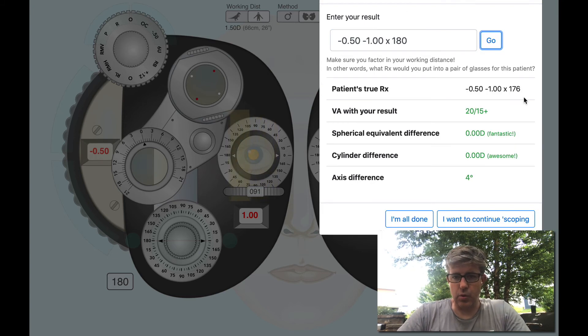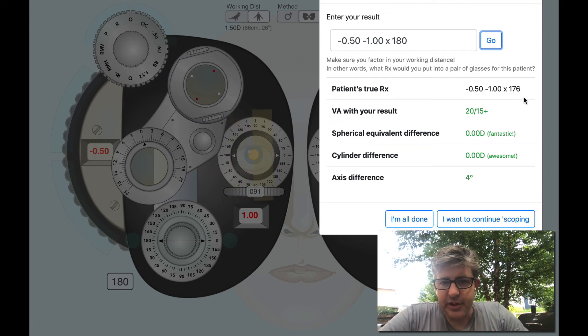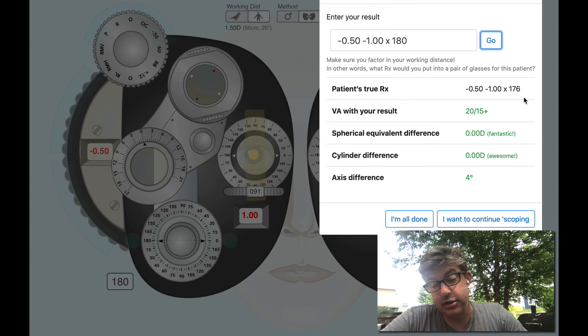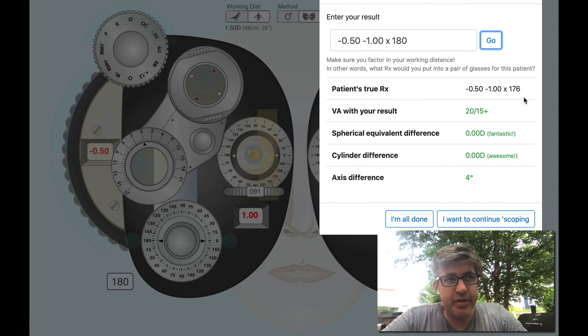Oh, that was really close. So I got the sphere dead on. I got the cylinder, axis 180 was my result, 176 was the actual. I call that a win. Looks like the tutorial does too. It says my patient's seeing better than 2015, which is pretty impressive.